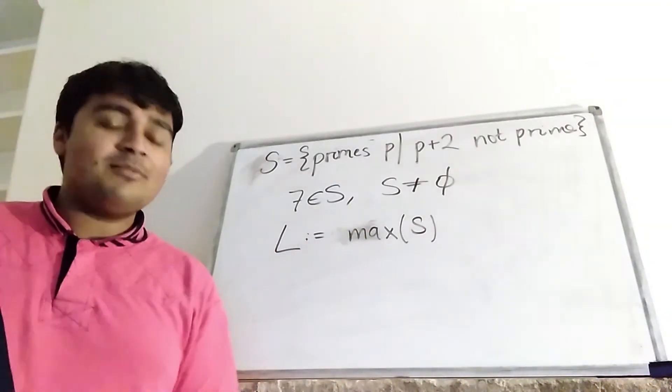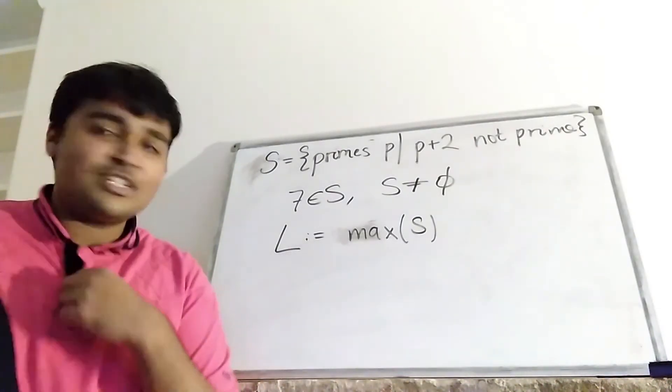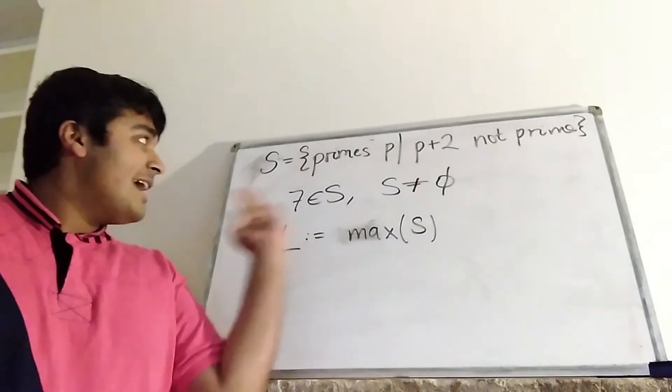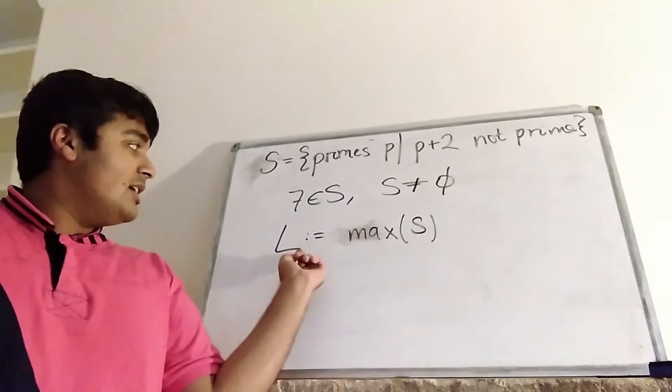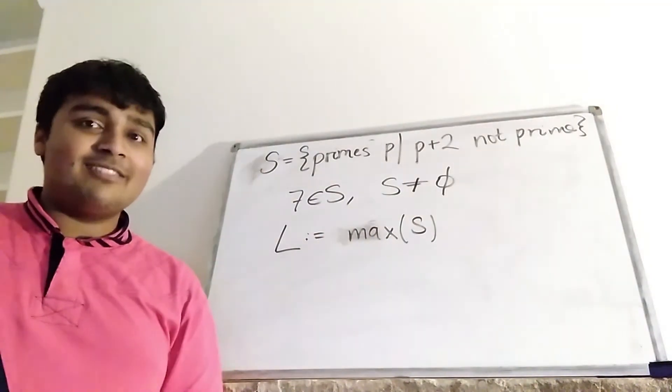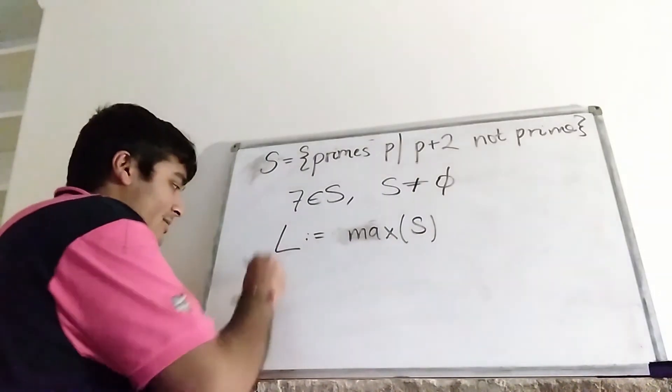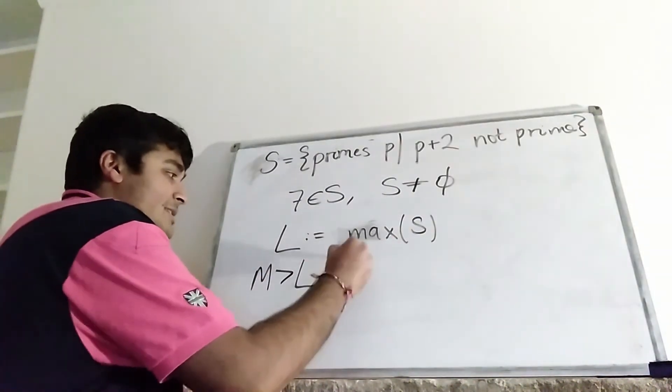Now, remember that there are infinitely many primes. This is a very standard common result. To prove that, you just prove that by contradiction. I'm not going to do that in this video. Anyway, we want to, sorry, so there's going to be a prime bigger than L, certainly. Okay, so let M be some prime number bigger than L. So, M is bigger than L, and M is prime.